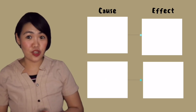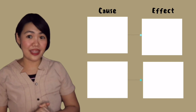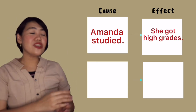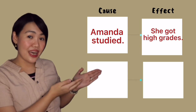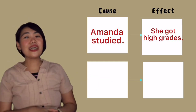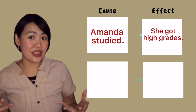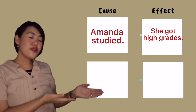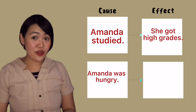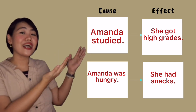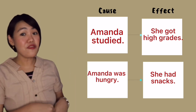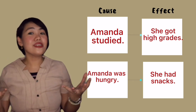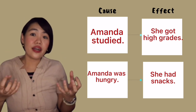Let's have examples of cause and effect relationship statements. The first statement: Amanda studied, she got high grades. The cause is Amanda studied and the effect is she got high grades. Because Amanda studied, she got high grades. Another statement: Amanda was hungry, she had snacks. The cause is Amanda was hungry, and the effect is she had snacks. Why did Amanda have snacks? Because she was hungry — that is why the effect is she had snacks.